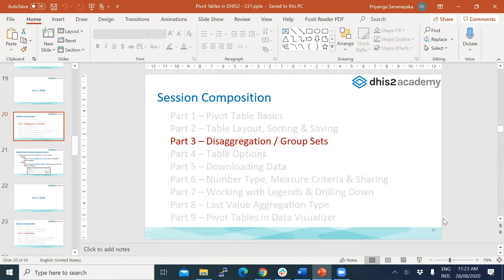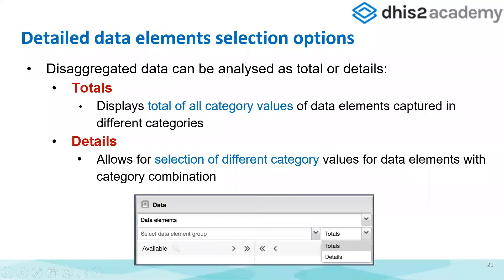Part three is about disaggregation and group sets. In a pivot table, you can include both disaggregated and total data. For that, you have to have disaggregate data in your instance. Say you have some data element recorded, disaggregated by sex as male and female — then you can disaggregate that specific data element into its male and female components. DHIS2 allows you to show your data in disaggregated and total formats.